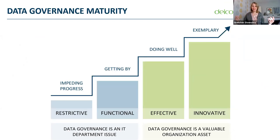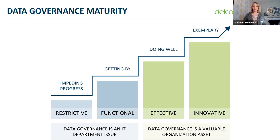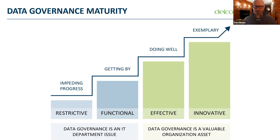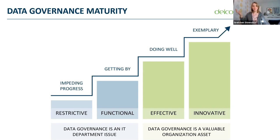There are lots of maturity models out there. Delcor has an IT maturity model, but really the point is just — where are you on this continuum? Are you in a restrictive state where you're doing a lot of manual work and a lot of guessing? Are you functional — just doing okay, but not great? The goal is to get into the effective and innovative range, where you're doing really well. Some people are fine staying in effective and don't need to get into the innovative category, but that's a good stretch goal. These are the four classic steps to maturity when you're evaluating yourself.